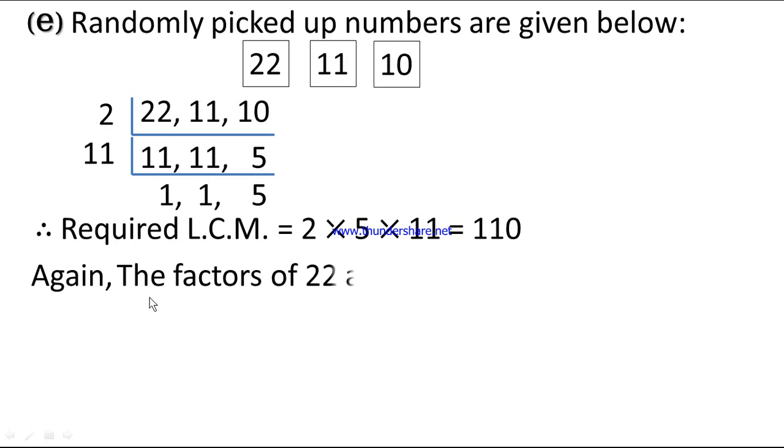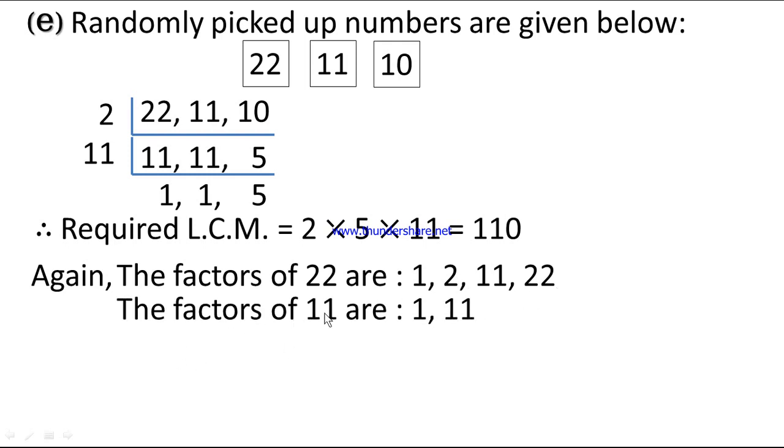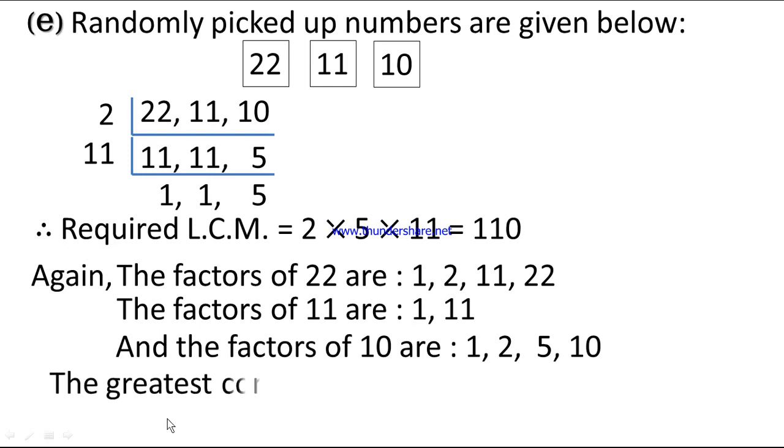Again, the factors of 22 are 1, 2, 11, and 22. The factors of 11 are 1 and 11. And the factors of 10 are 1, 2, 5, and 10. The greatest common factors of 22, 11, and 10 is only 1.